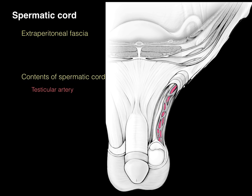The testicular artery arises from the abdominal aorta, provides blood supply, and courses through the deep inguinal ring, through the inguinal canal, out the superficial inguinal ring, and supplies the testis. The pampiniform plexus of veins transports blood in the opposite direction. It's a plexus — instead of one vein, there are three or four veins that wrap around the testicular artery. The left pampiniform plexus drains to the left renal vein, and the right drains directly to the IVC.